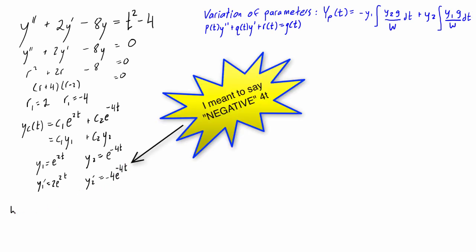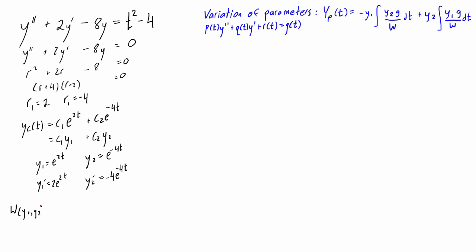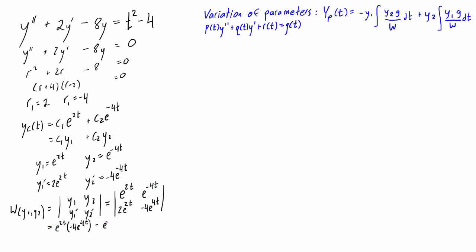The Wronskian of y1 and y2 is found by putting them into a matrix in the order y1, y2, y1', y2' and taking the determinant. If you fill in all those values and perform the determinant, we find that W = -6e^(-2t).